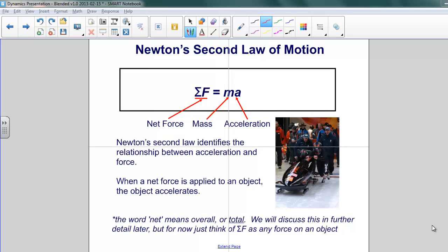The way in which force affects the motion of an object is described by Newton's second law of motion. Here, the net force acting on the object is equal to the mass of the object times the object's acceleration. So when a net force is applied to an object, the object accelerates.